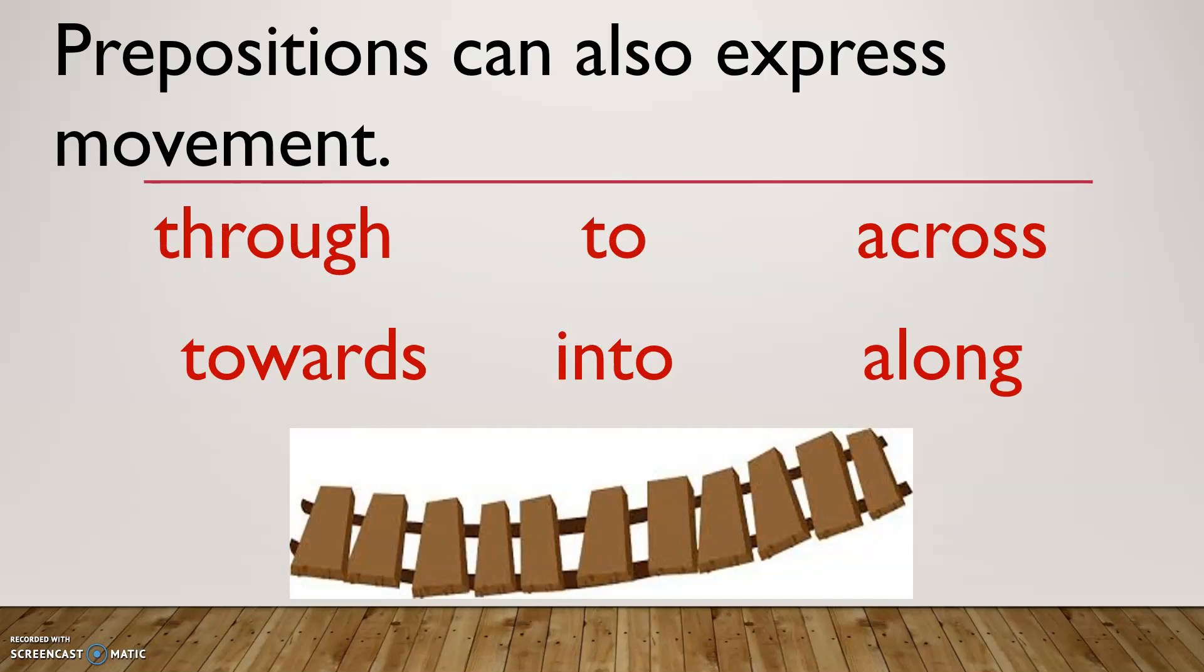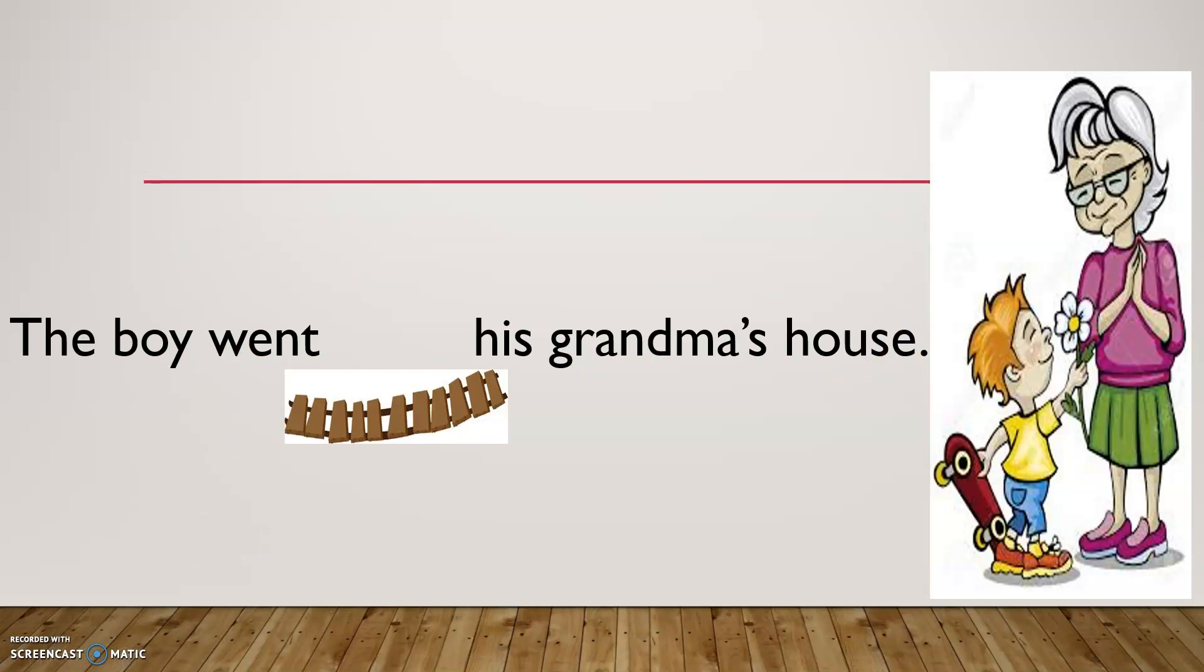Prepositions can also express movement. So, it's not only places, it's not only time, it's also movement. For example, through, towards, to, into, across, and along. All of those words are prepositions. For example, the boy went his grandma's house. What should we add here? Which preposition? The boy went to. That's great. To. The boy went to his grandma's house.